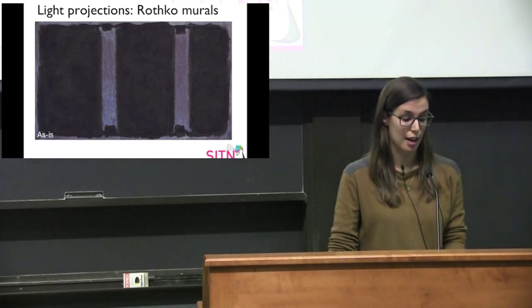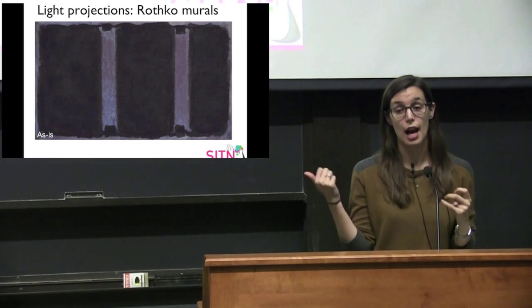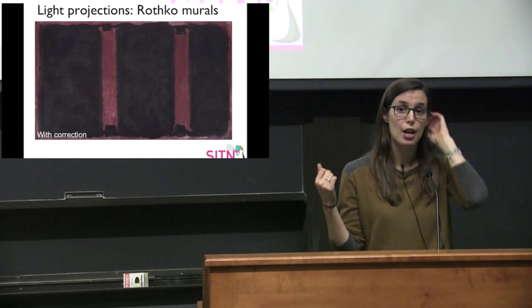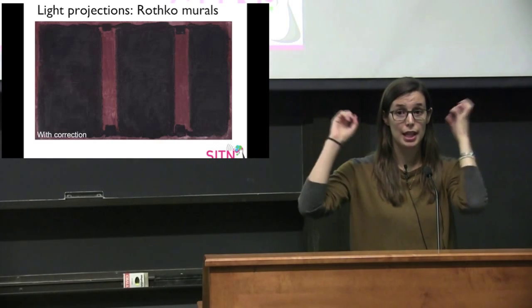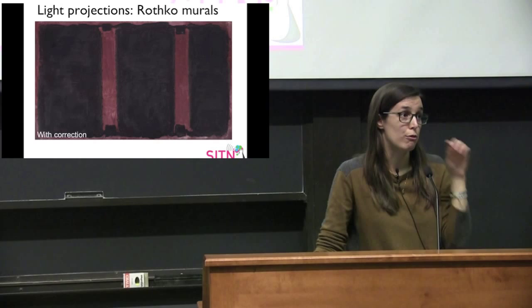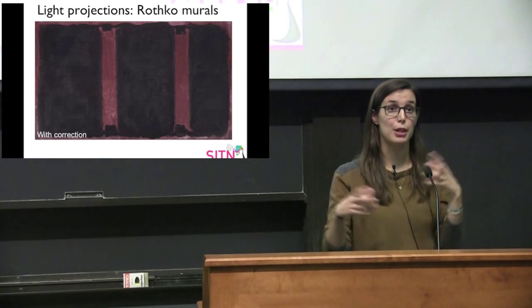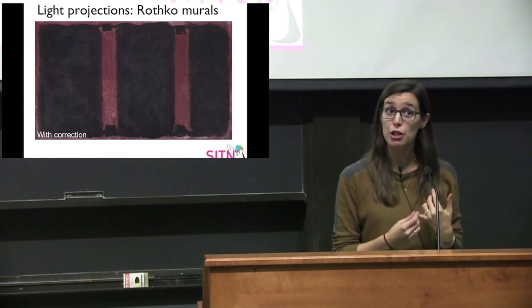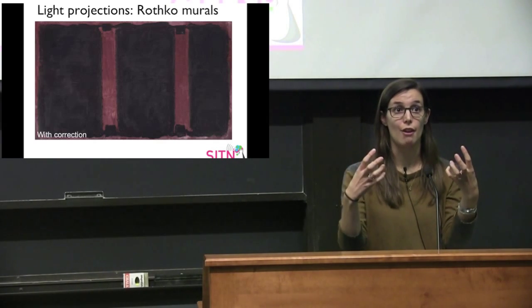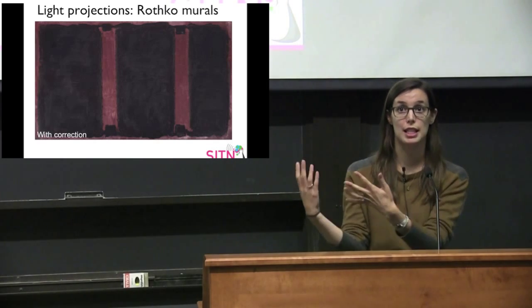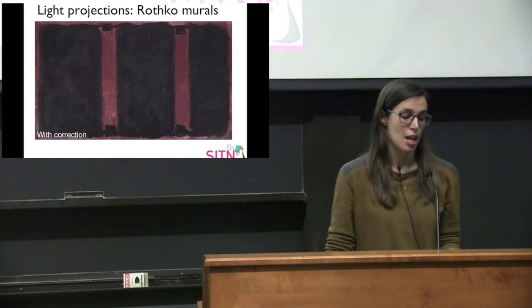They made projections to do that, and until July these were on display at the Harvard Art Museums where you could go see the murals in person with the light projectors. Every day, an hour before closing, they would turn off the projectors so you could actually see what the murals look like without them. What's nice about this method is that you get the correct color and correct feeling from the work, but you don't lose things like the artist's brush strokes or any other character — it retains the character the artist intended while also looking the way the artist intended, even though it no longer does naturally.